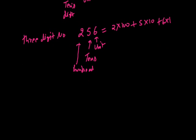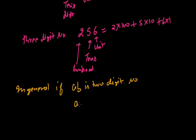So in general, if AB is a 2 digit number, then it can be written as: A is the tens digit, so it should be multiplied by 10, and B is the unit digit, so it should be multiplied by 1. So the 2 digit number AB can be written as A into 10 plus B into 1.